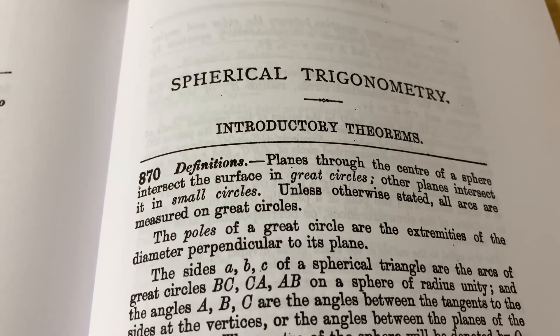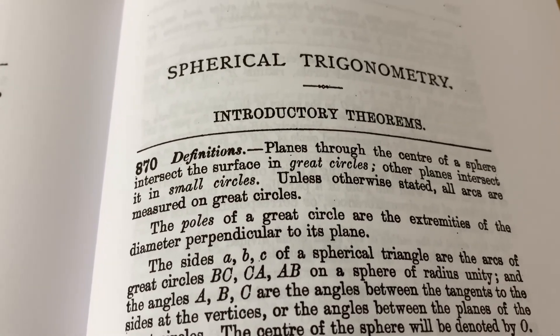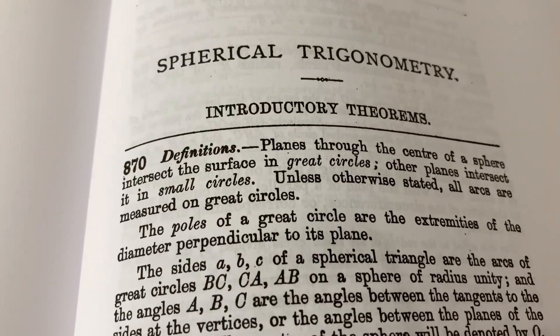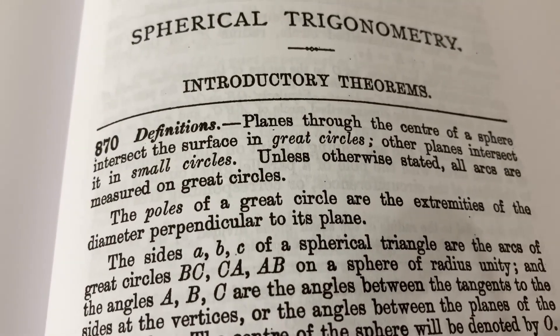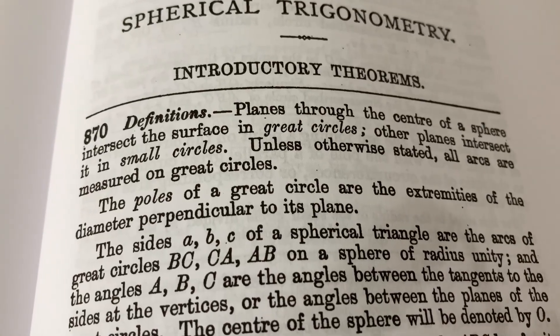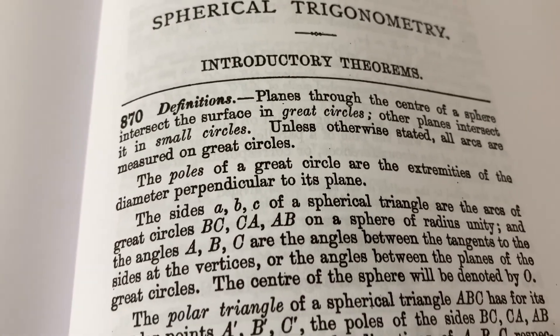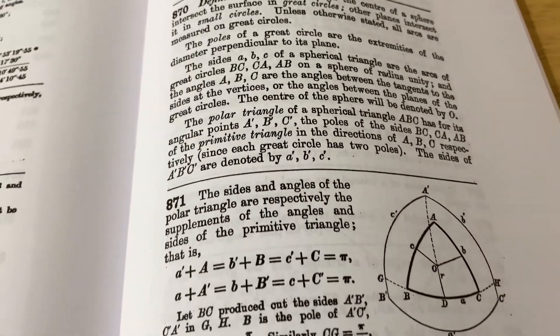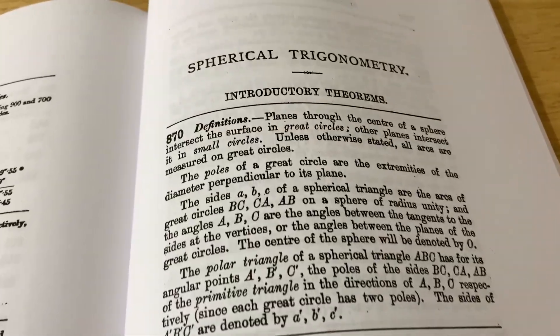This book also discusses spherical trigonometry, which is rarely taught today. In fact, I've never seen any college offer a course on spherical trigonometry. Planes through the center of a sphere intersect the surface in great circles. Other planes intersect it in small circles. Yeah, and so this is a subject that was taught in the past. I actually have entire books on spherical trigonometry.